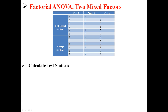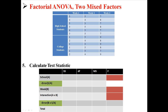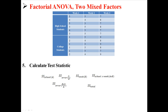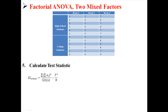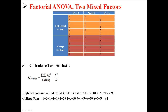Next, we must calculate the test statistic. We already have the degrees of freedom and can put those in the table. We just need to find six sum of squares: for school, for the error for school, for week, for the interaction, for the error for that, and for total. We're going to start with school, factor A. This is just like it is in an independent factors ANOVA — we split them up by high school and college, because those are our two levels of A.